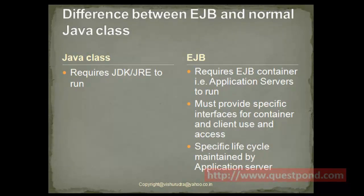Now let's see the differences between EJB and a normal Java class. Even though EJB coding takes place with respect to Java, it requires a special EJB container. The EJB containers, which are generally also known as application servers, are required for EJBs to run — that is, EJB runs in a particular hosted environment. Second, in order to make use of EJBs, we are required to code some interfaces to be used by clients. Some of these commonly known interfaces are the home interface and the remote interface, which are required to invoke EJB. The EJB lifecycle is maintained typically by the application server, and lifecycles differ based upon the different types of EJBs, which we will cover in later sessions.